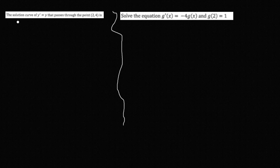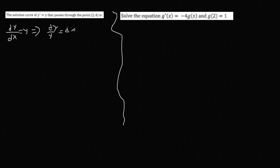So we have the solution curve of y equals y prime, and it passes through a given point. So y prime is the same thing as dy/dx, so dy/dx equals y. We can use separation of variables — multiply both sides by dx and divide by y. So dy over y equals dx. Integrating both sides gives ln of the absolute value of y equals x plus C.